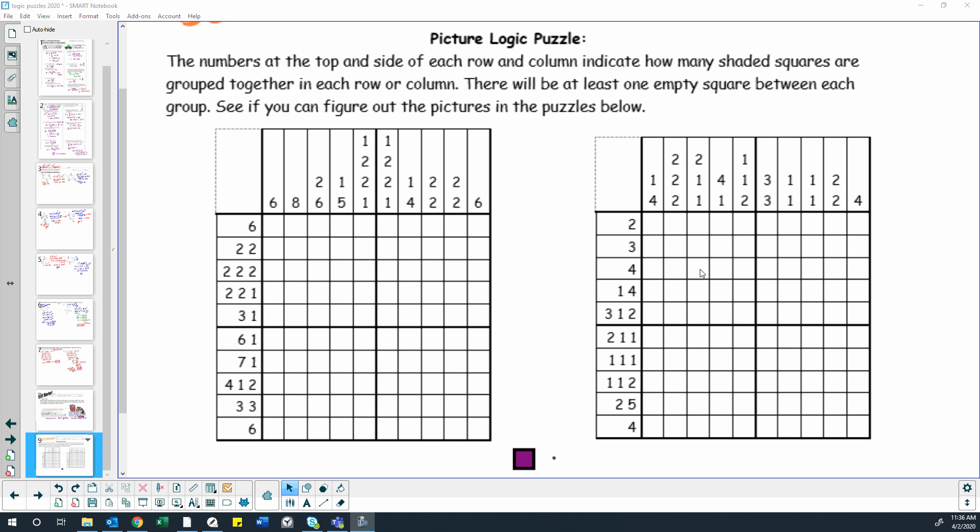You will get points just for effort. Here's how it works. The numbers above the columns tell us how many blocks of color are together on each column. And then the numbers along the rows tell us the number of blocks of color along each row.